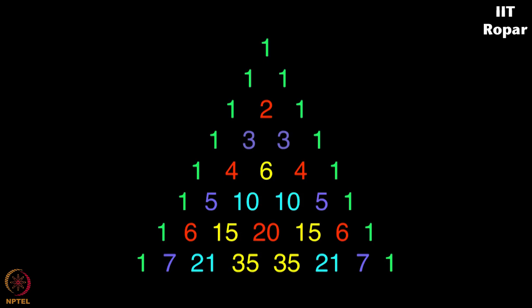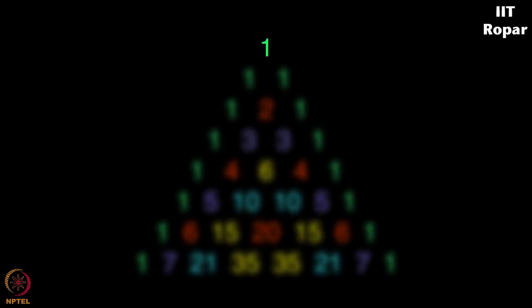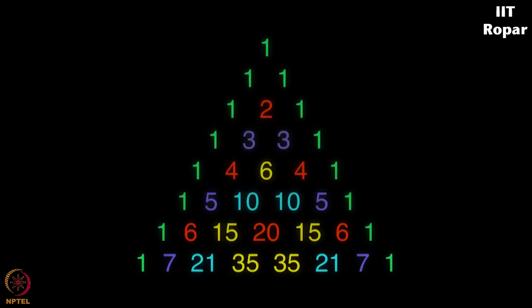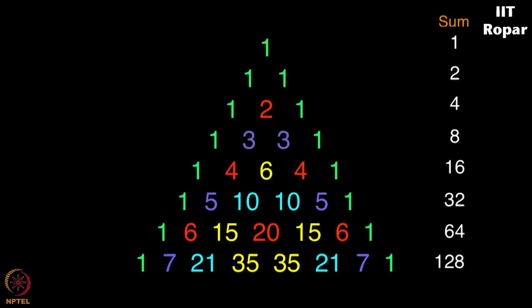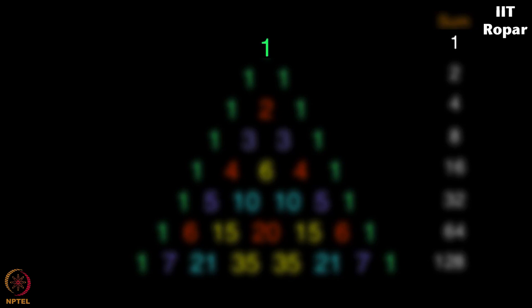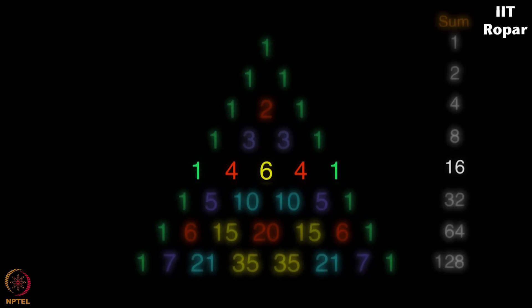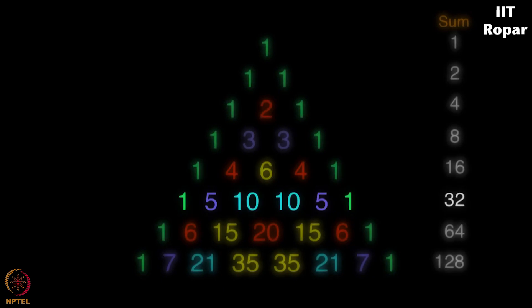Each row—the first row 1, second row 1, 1, the third row 1, 2, 1, the fourth row 1, 3, 3, 1 and so on—the sum of the numbers in each of the rows comes up to 2 to the n. So 1 is 2 to the 0, 1 plus 1 is 2 to the 1, 1 plus 2 plus 1 is 4 which is 2 square, 1 plus 3 plus 3 plus 1 is 8 which is 2 cube, 1 plus 4 plus 6 plus 4 plus 1 is 16 which is 2 to the 4 and so on.